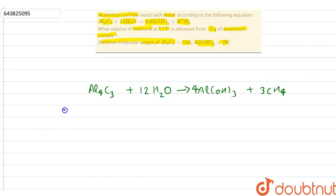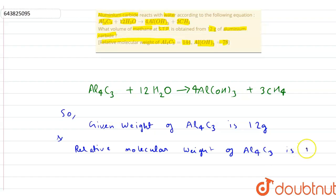So, given weight of aluminium carbide, that is Al4C3, is 12 gram, and also relative molecular weight of Al4C3 is 144.